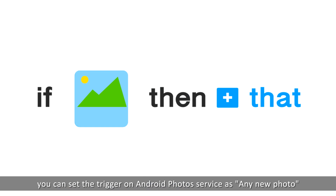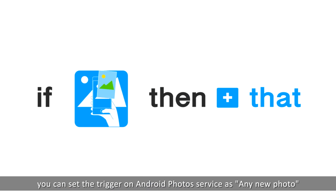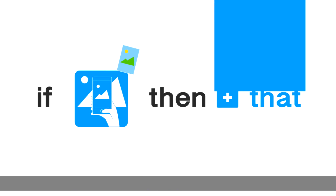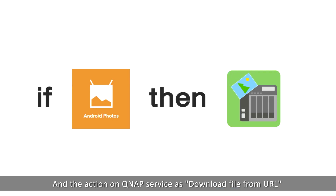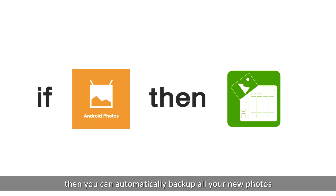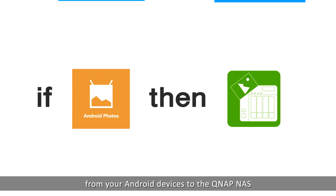For example, you can set the trigger on Android Photo Service as any new photo, and the action on QNAP Service as download file from URL. Then you can automatically back up all your new photos from your Android devices to the QNAP NAS.